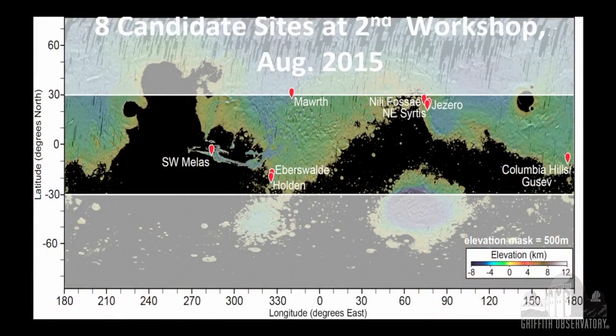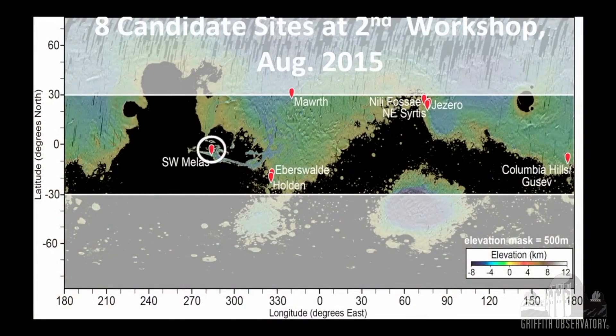One of the eight locations is right in Valles Marineris. Valles Marineris is the biggest rift in the solar system — 10 kilometers from the top to the bottom. This particular site is cantilevered halfway down the escarpment: five kilometers from the top, five kilometers from the bottom, on this little ledge just big enough that you could barely fit a landing ellipse in. And the engineers are going, 'Are you sure? There's got to be someplace better than that.'